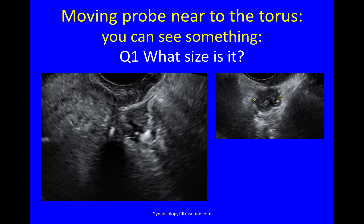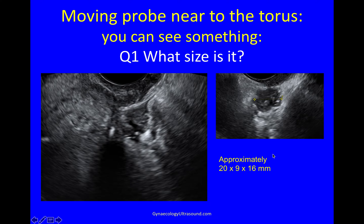When you're moving your probe near the torus, you can see something else. What is it? I've just looked at it and done a rough measurement — it's approximately two centimetres long. Once I've looked at it, I need to work out: what is it? Could it be deep endometriosis in the ligaments, or is it a bowel nodule, or is it a small tumour?